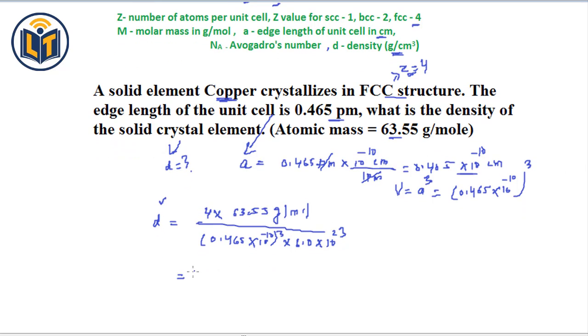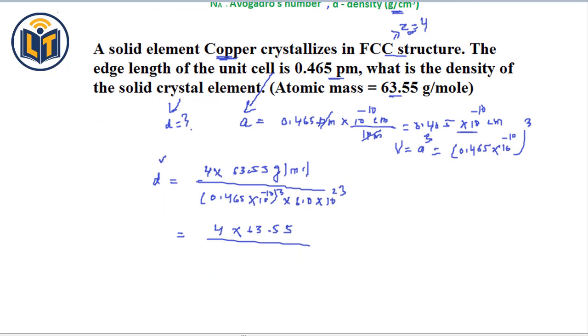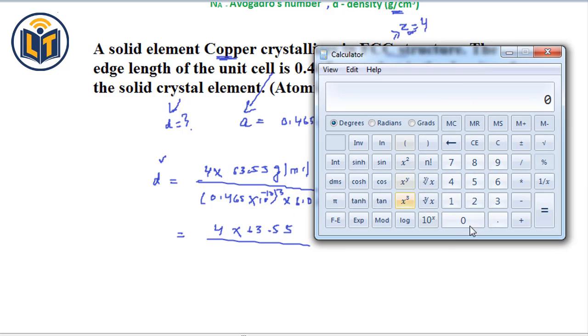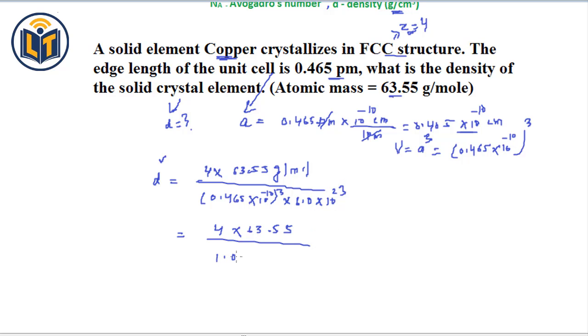We move ahead. Here we have 4 multiplied by 63.55 and divided by, here we have, we can use the calculator. There is a cube. So, 0.465 multiplied by 10 to power minus 10 and it is cubed. This is the value we get 1.005 and multiplied by 10 to power minus 31. And so, Avogadro number is there, 6.0 multiplied by 10 to power 23.